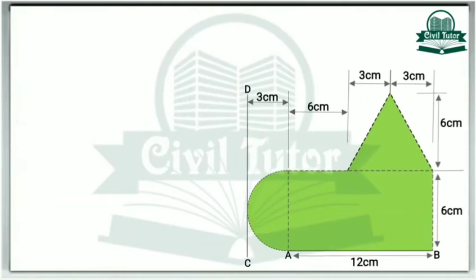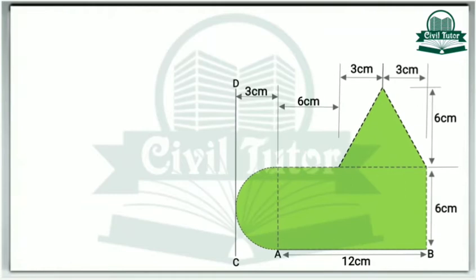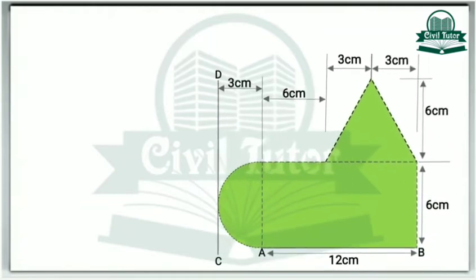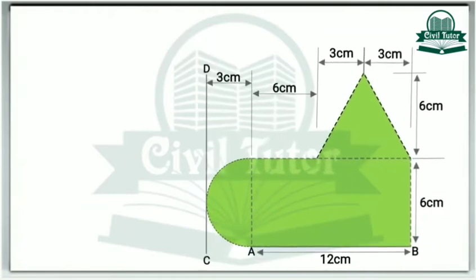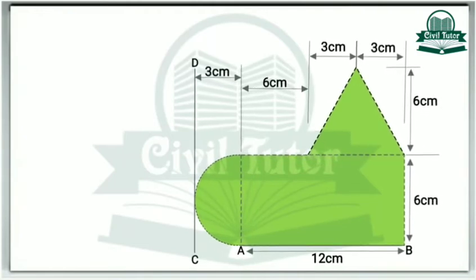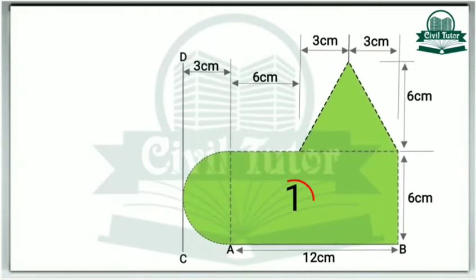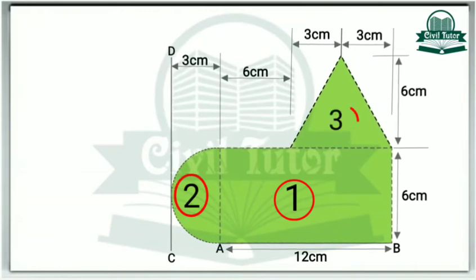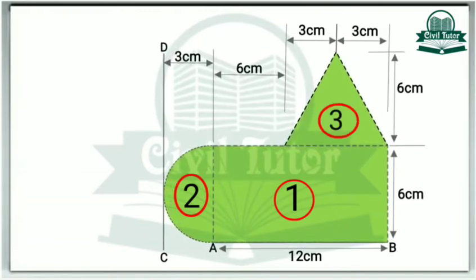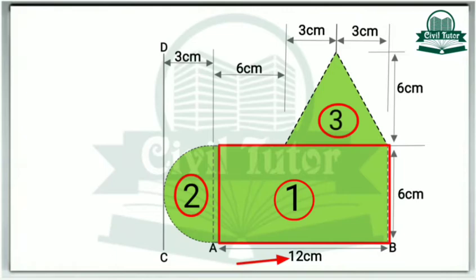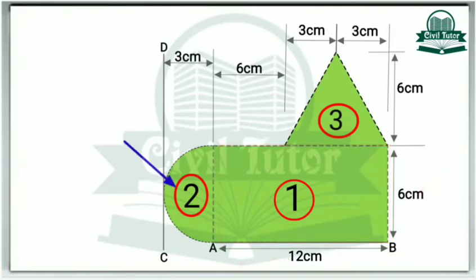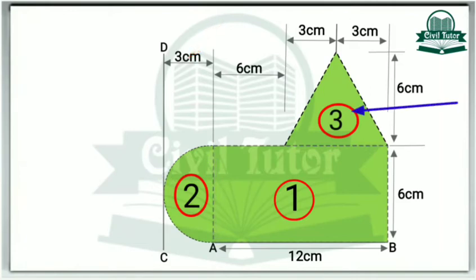Whenever we need to find the center of gravity of a composite section we divide the section into a number of areas. Similarly we will divide this lamina into three areas: area one, area two, and area three. Area one is a rectangular shape having dimensions 12 centimeter by 6 centimeter. Area two is a semicircle having a radius of 3 centimeter and a diameter of 6 centimeter. Area three is a triangular shape having a base of 6 centimeter and height 6 centimeter.